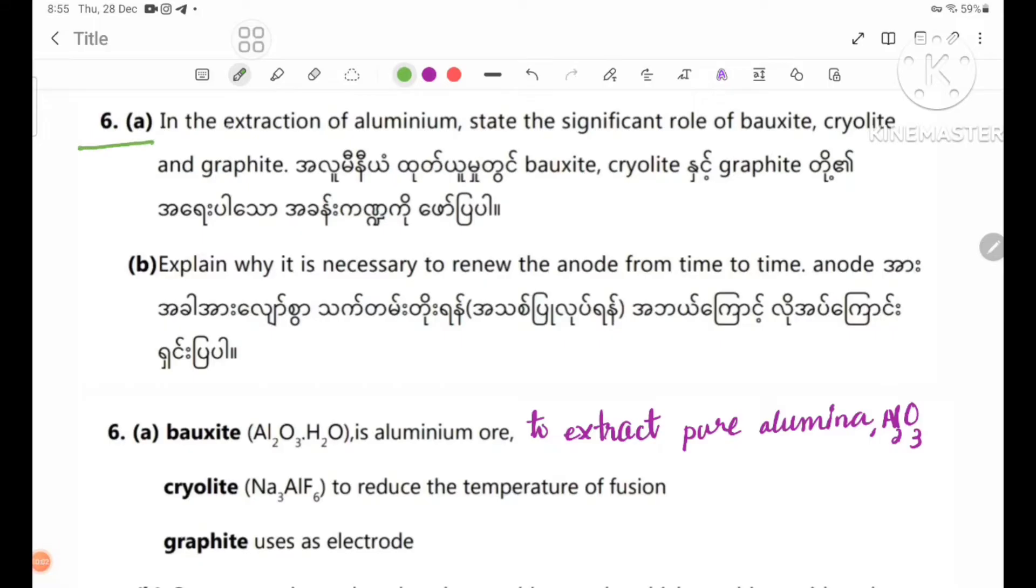Number 6A: In the extraction of aluminum, state the significant role of bauxite, cryolite, and graphite. Bauxite formula is Al2O3·H2O. Bauxite is used to extract pure aluminum Al2O3.